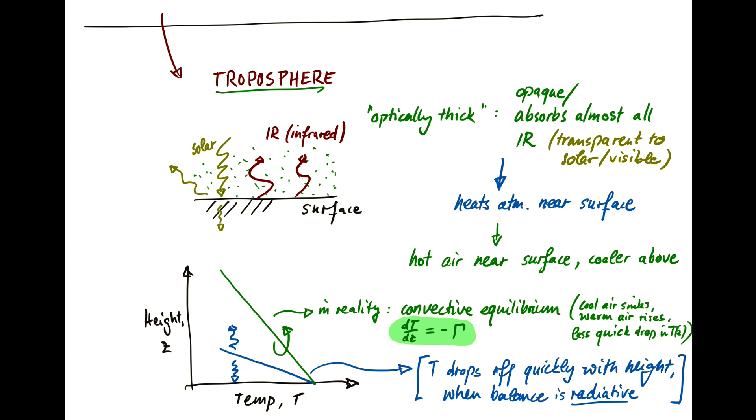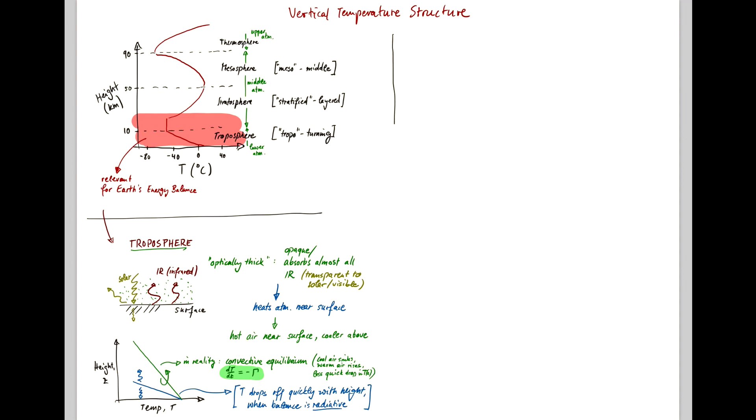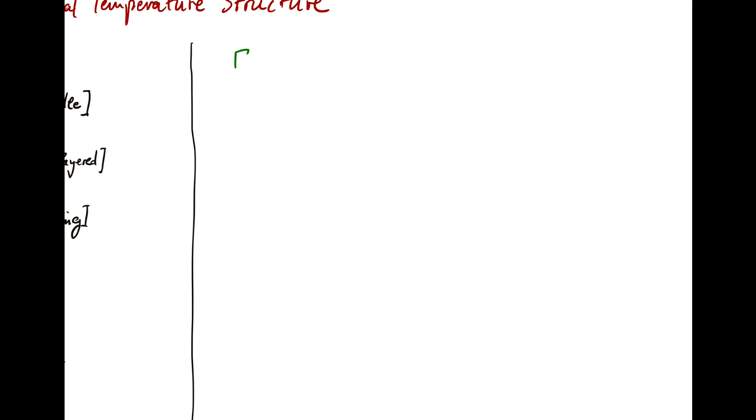So let's look a little bit more at this capital gamma here. Capital gamma is called the adiabatic lapse rate.